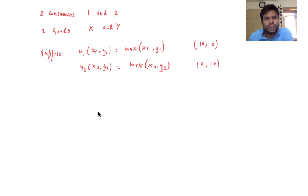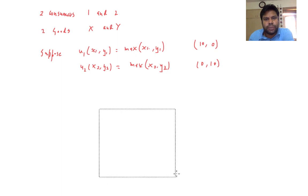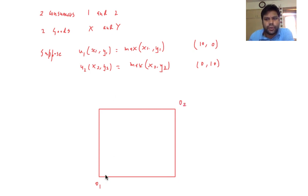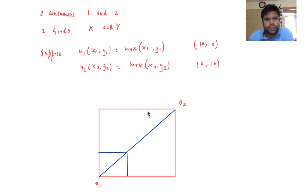Let us plot this environment in the Edgeworth box. The dimension of the Edgeworth box is 10 by 10. This is the origin of consumer 1 and this is the origin of consumer 2. Let me draw 45-degree lines — these are the indifference curves of individual 1, and these are the indifference curves of individual 2.